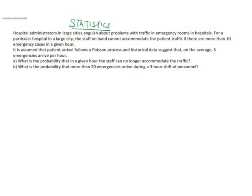Hello, good day everyone. Welcome to another tutorial of the statistics course by SmartViewKites. This is a question under Poisson distribution. Hospital administrators in large cities face problems with traffic in emergency rooms. For a particular hospital, the staff cannot accommodate patient traffic if there are more than 10 emergency cases in a given hour. Patient arrivals follow a Poisson process, and historical data suggests that on average five emergencies arrive per hour. Part A asks: what is the probability that in a given hour the staff can no longer accommodate the traffic?